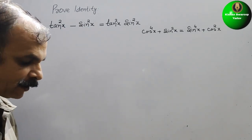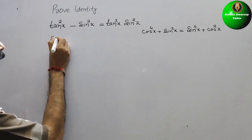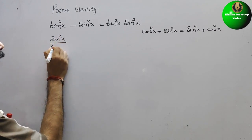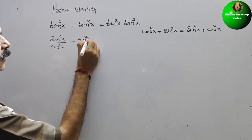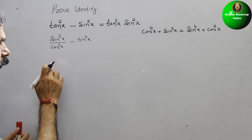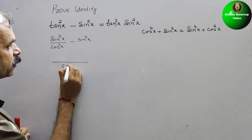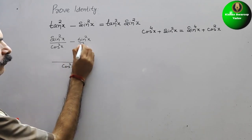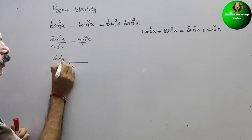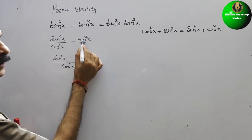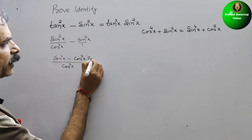So tan square x is what? It is sin square x divided by cos square x, minus sin square x. Now we will take the LCM, which will be cos square x. So it becomes sin square x minus cos square x times sin square x, all over cos square x.